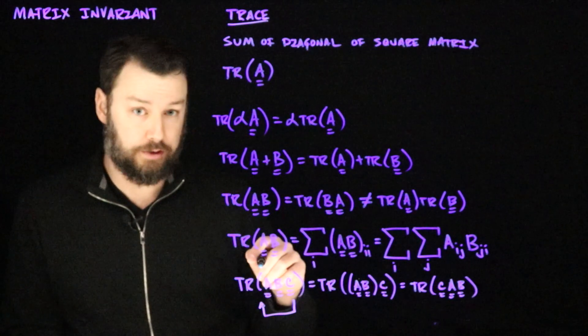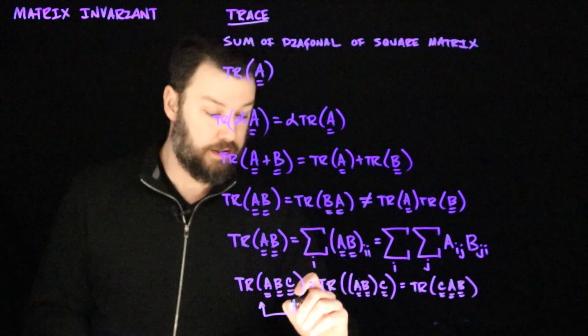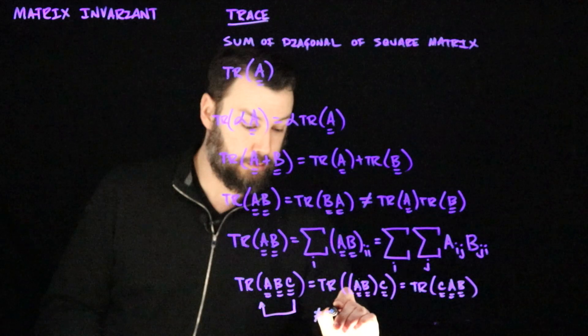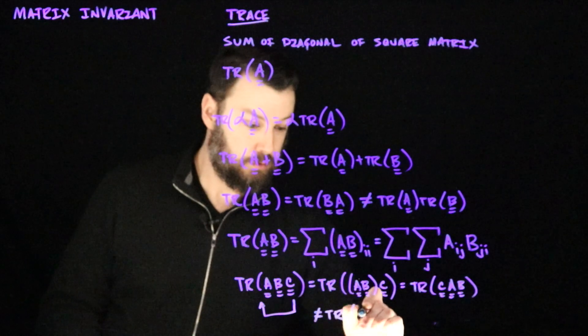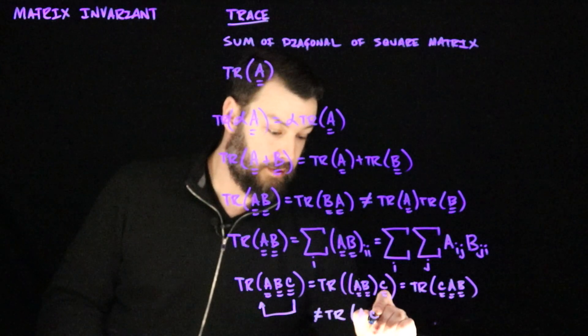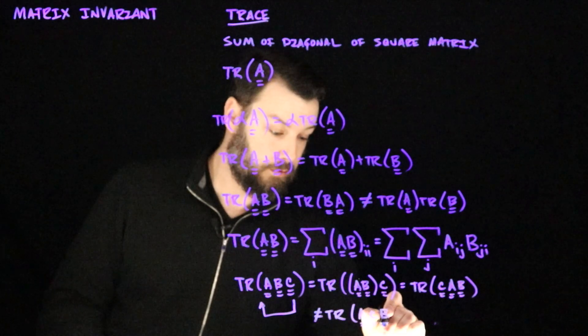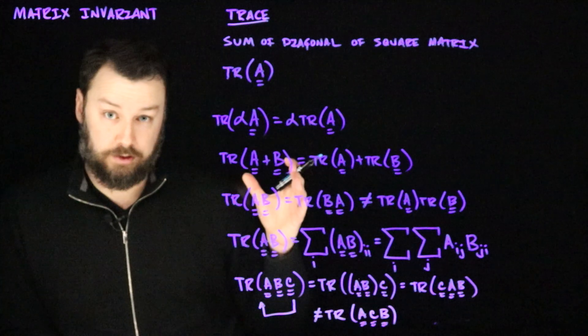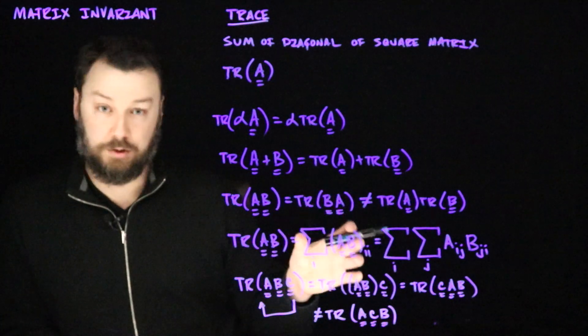Note that this does not necessarily allow for arbitrary permutations, only cyclic permutations. That is to say that it's not necessarily the case that this will be equal to A, C, B.